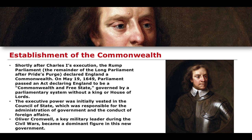The Rump Parliament — the remainder of the Long Parliament after Pride's Purge — declared England a Commonwealth in 1649. Parliament passed an act to declare England to be a Commonwealth and free state, governed by a parliamentary system without a king or House of Lords.